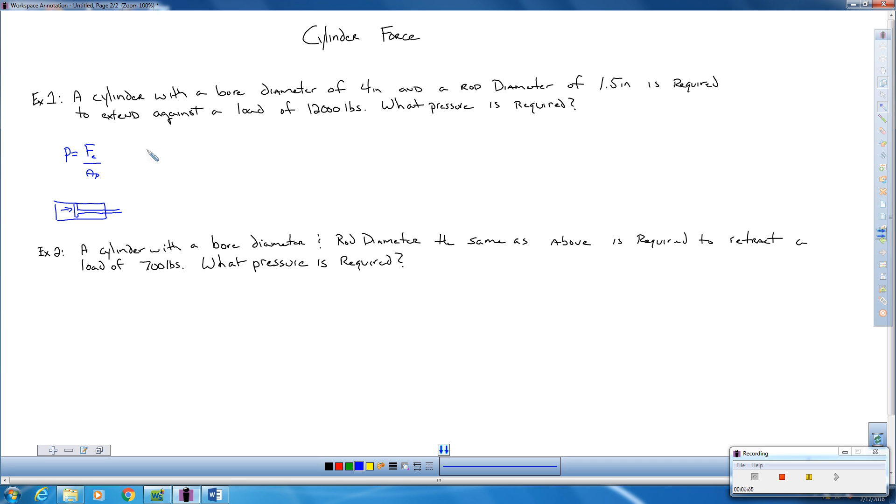The first step, we need to calculate the area. So the area, the piston in this case, stick with our normal equation, pi d squared over 4. So that's going to be pi times 4 squared over 4. And when you calculate all that out, you should roughly get about 12.57 inches squared. So that's our area.